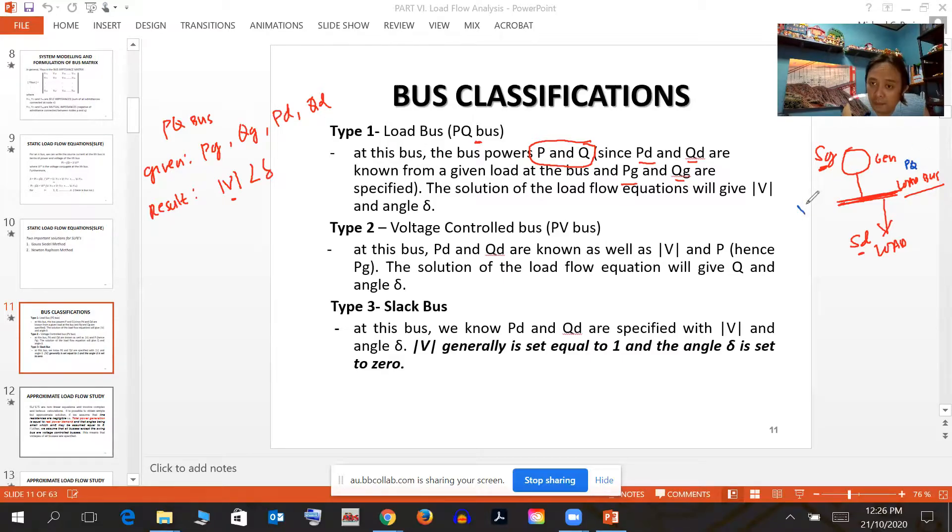If given S, P, P_G, Q_G, P_D, and Q_D, by simulation or iterative technique, you can get the voltage and the bus angle. There's also the voltage control bus or PV bus, where the voltage must be limited to a certain value.